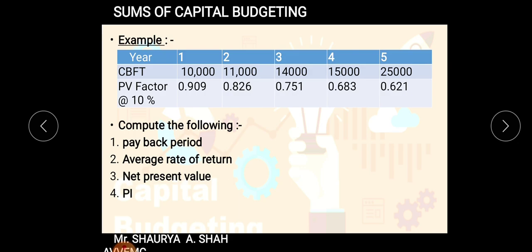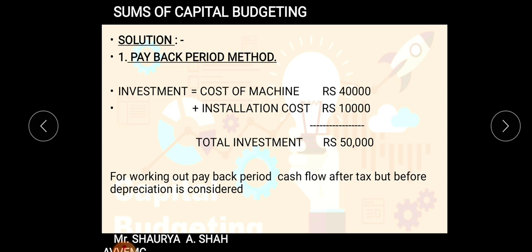This was the example we discussed in the last lecture. Five years are given as the economic life of the project. The cash flow before taxes and before depreciation is given, and the discounting rate is also given. What you need to calculate is: payback period, average rate of return, net present value, and profitability index (PI).